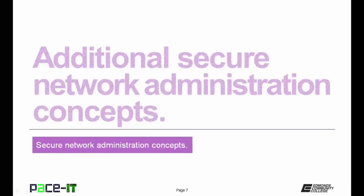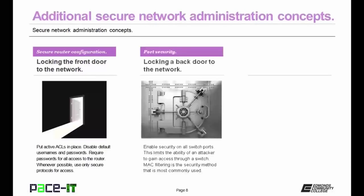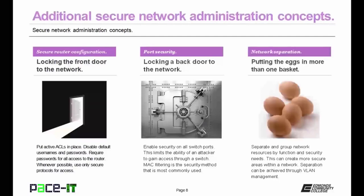Now let's move on to some additional secure network administration concepts. First is secure router configuration — locking the front door to your network. Put active ACLs in place, disable default usernames and passwords, require passwords for all access to the router, and whenever possible use only secure protocols to access the router. Then there's port security on switches — locking a back door to the network. Enable security on all switch ports to limit the ability of an attacker to gain access through an open switch port. MAC filtering is the security method most commonly used to secure switch ports. Then there's network separation — separate and group network resources by function and security needs, which can be achieved through VLAN and VLAN management.